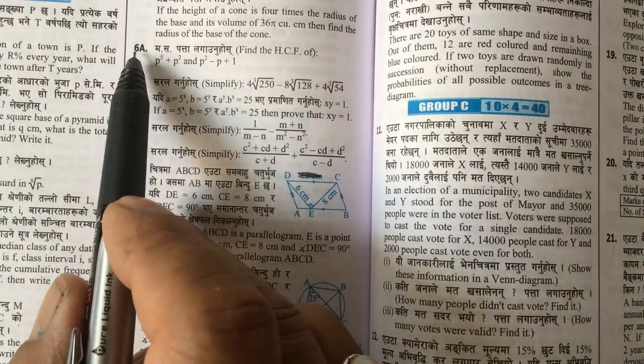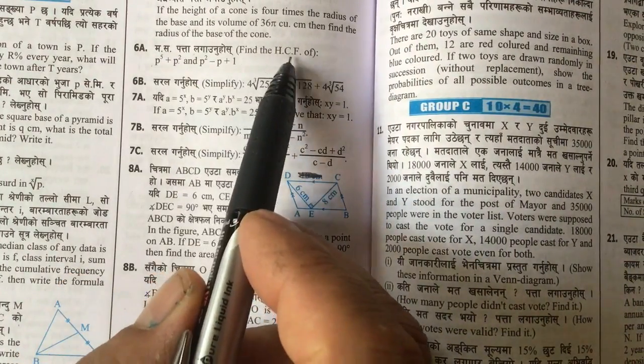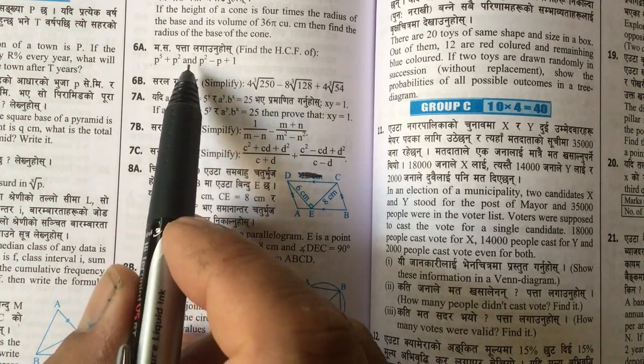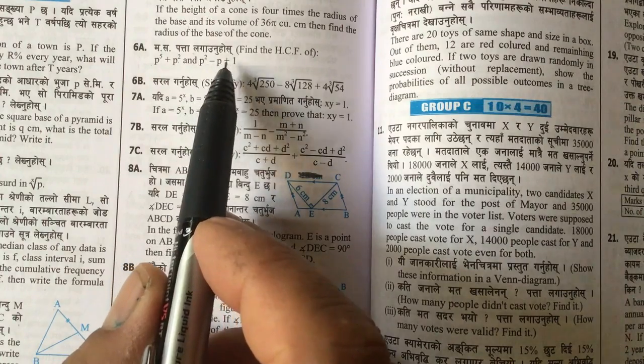The question is like this, 6a first of all, find the HCF of p to the power 5 plus p square and p square minus p plus 1.